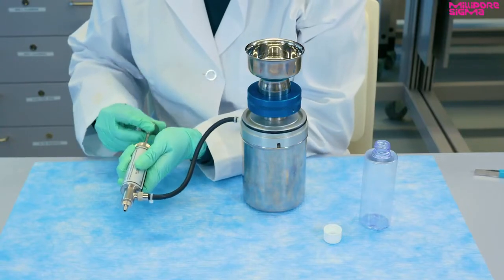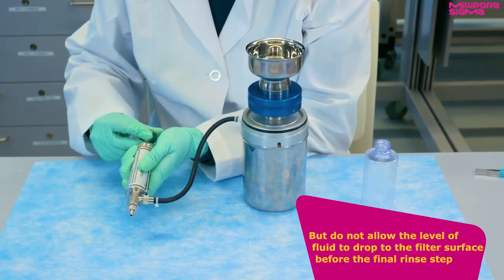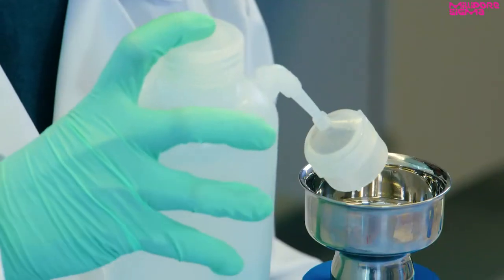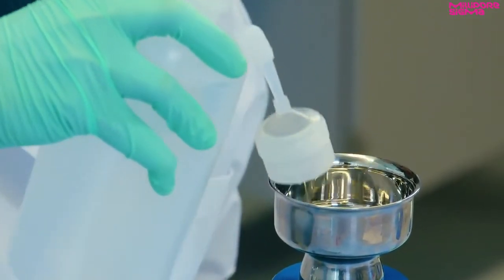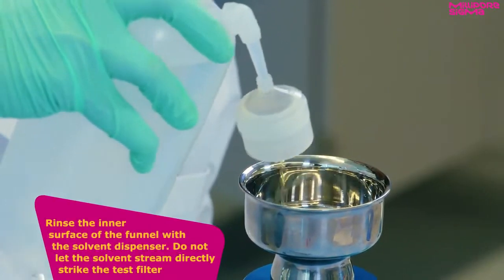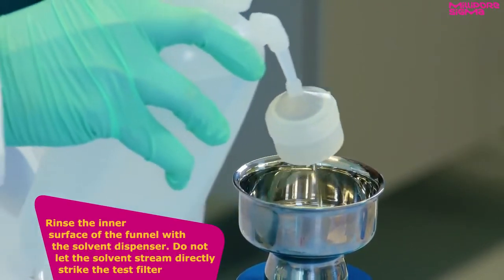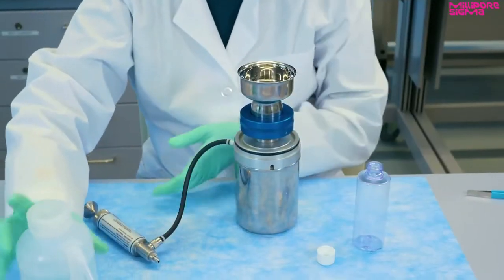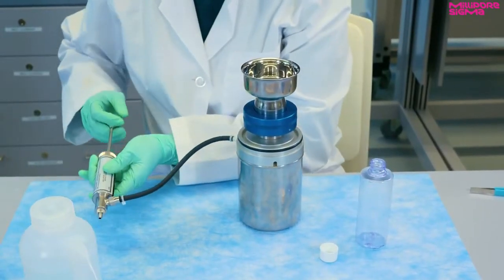Operate the syringe again if necessary, but do not allow the level of the fluid to drop to the filter surface before the final rinse step. When the sample level in the funnel drops to the narrow neck of the funnel, rinse the inner surface of the funnel with the solvent dispenser. Do not let the solvent stream directly strike the test filter. Continue filtration until all the fluid has passed through the filter.